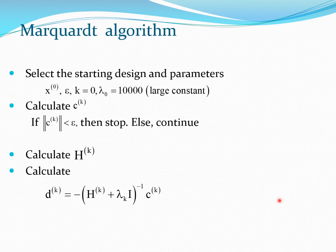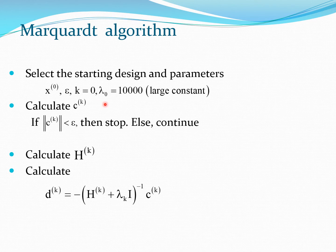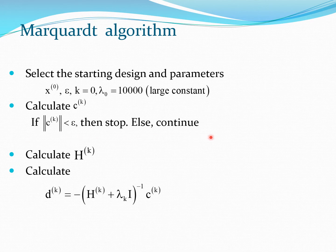Let us write this method out in a form which can be used for programming. We start with the starting design x_0, a small number epsilon such as 10^-8. We start with k=0 and a value of lambda such as 10,000, so lambda_0 = 10,000. The first step is to calculate the gradient vector. If the norm of the gradient vector is less than epsilon, then you stop; else you continue.